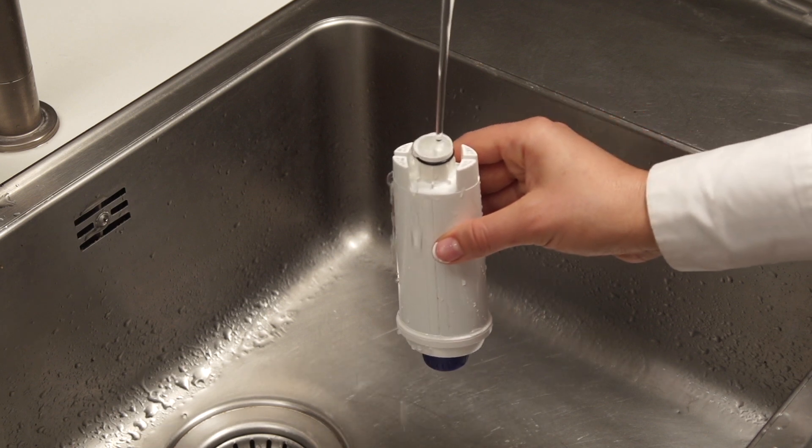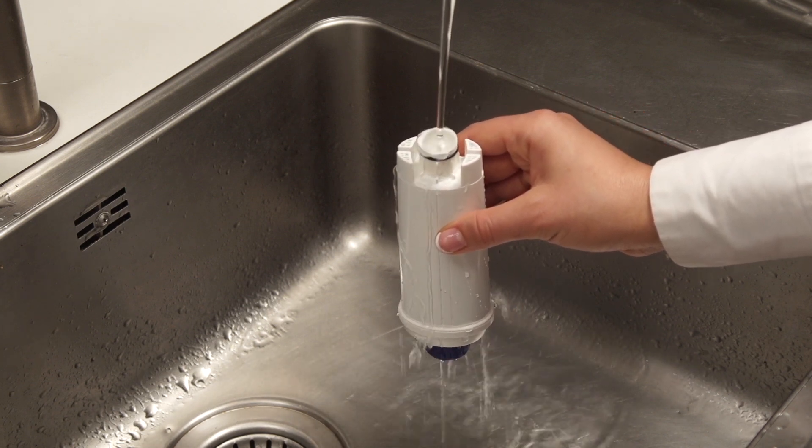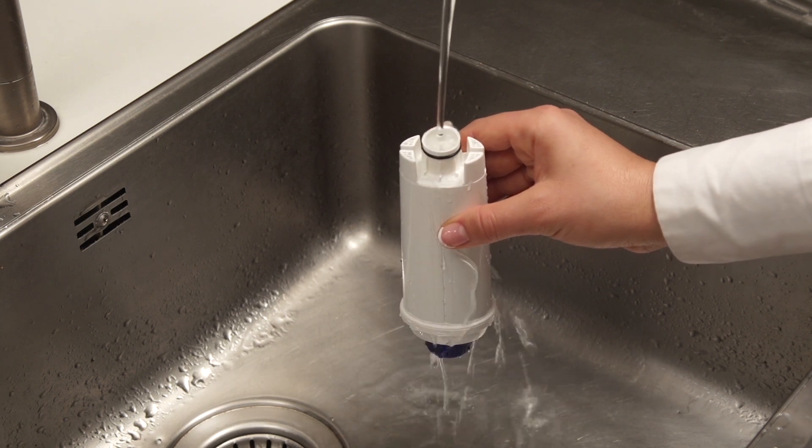To activate the filter, run tap water through the hole in the filter until water comes out of the openings at the side for more than a minute.